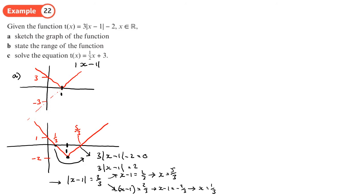Part b: state the range of the function. I can see this function starts down at negative 2 and goes up forever, so the range is t(x) ≥ -2 — greater than or equal to because it does actually touch that point. Part c: we're asked to solve t(x) = ½x + 3, so we draw the graph of ½x + 3 on our diagram. This is a line sloping up, crossing the axis at 3.